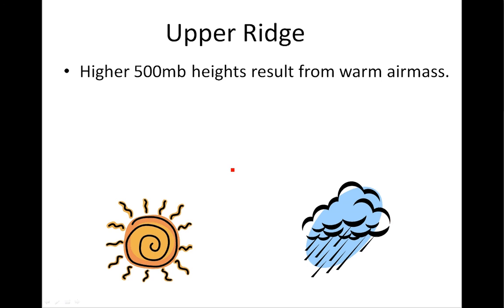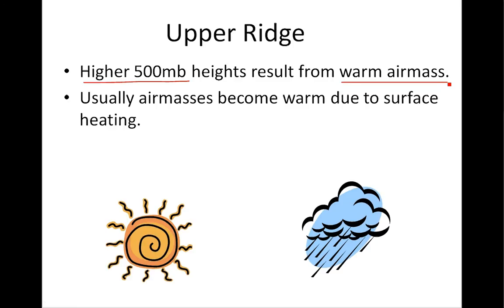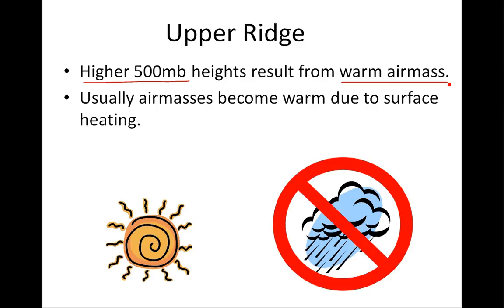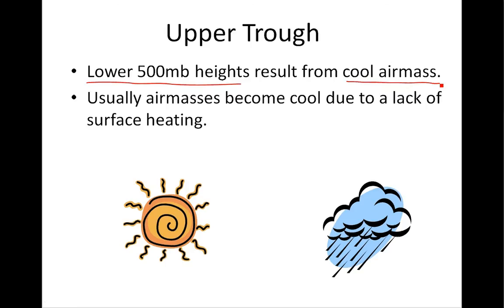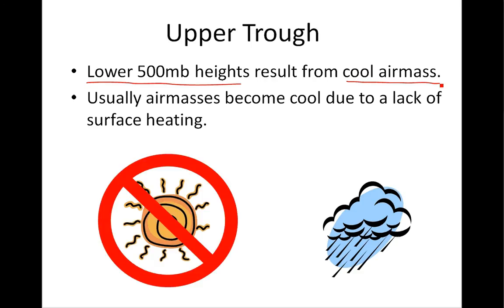When you have an upper ridge, it results from higher 500 millibar heights due to a warmer air mass. The best way to warm an air mass is to heat the ground below it, and the best way to do that is to shine sun on it. So upper ridges are often associated with sunny skies and warmer temperatures. Upper troughs are the opposite — lower 500 millibar heights, a cooler air mass, cloudier skies, and a better chance of precipitation. This is a basic conceptual model, but for the purposes of keeping this to 15 minutes, that's what we've got.